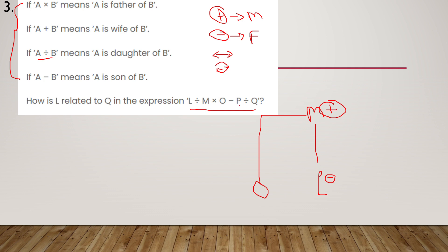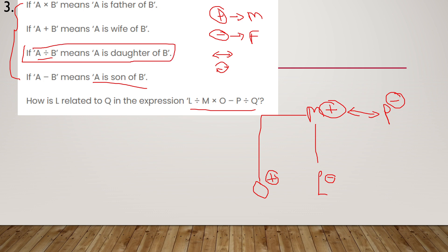Then O minus P — A minus B means A is the son of B. So O minus P means O is the son of P. Since O is a son, the gender of O is male. O is already son of M, so M is the father. From O minus P, we get to know that M and P are husband and wife and P is female. The last expression is P divided by Q — A divided by B means A is the daughter of B. So P divided by Q means P is the daughter of Q, meaning Q is a parent.